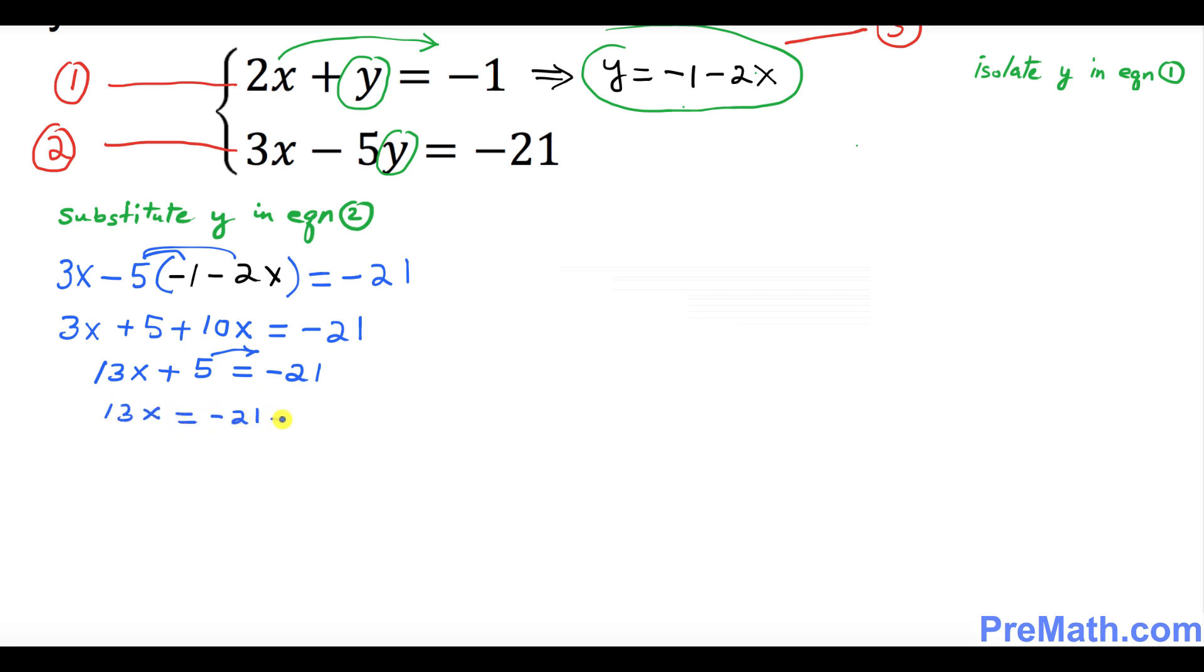Negative 21 minus 5 gives us 13x equals negative 26. Divide both sides by 13.